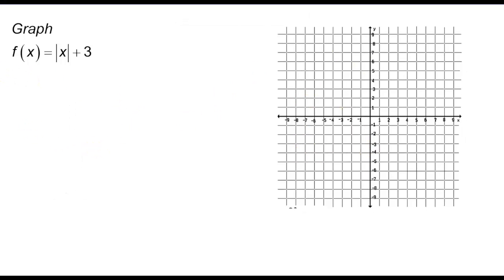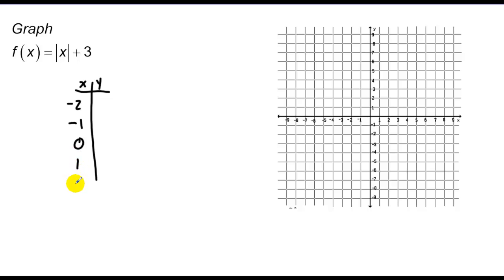Now, if I were to graph y = |x| + 3, I'm going to plug in those same values — -2, -1, 0, 1, 2 — without a calculator because it's not that difficult. Plugging in -2: absolute value is 2, plus 3 is 5. Negative 1 gets me 4, 0 gets me 3, 1 gets me 4, and 2 gets me 5. Plotting these points, I get a very similar looking graph going in both directions.